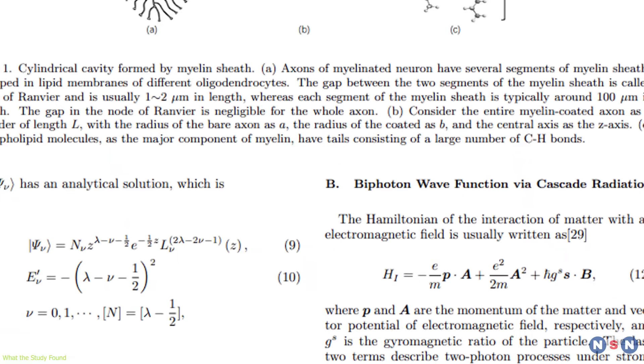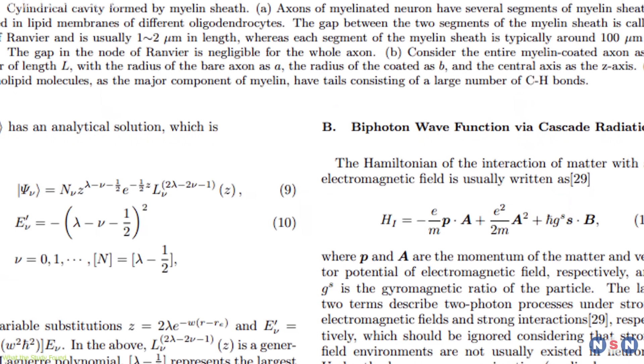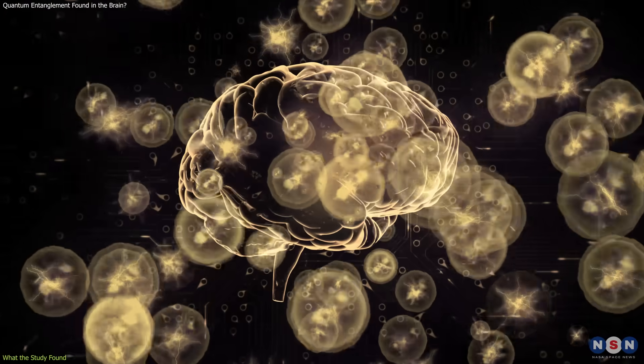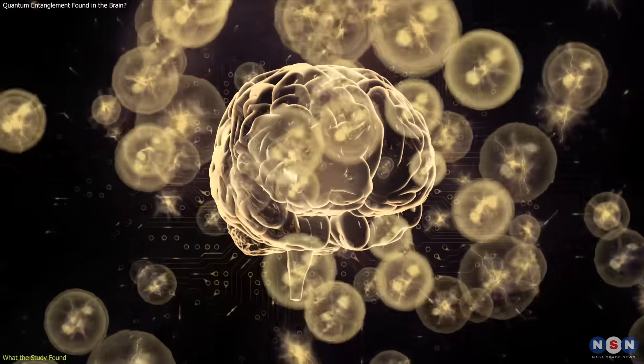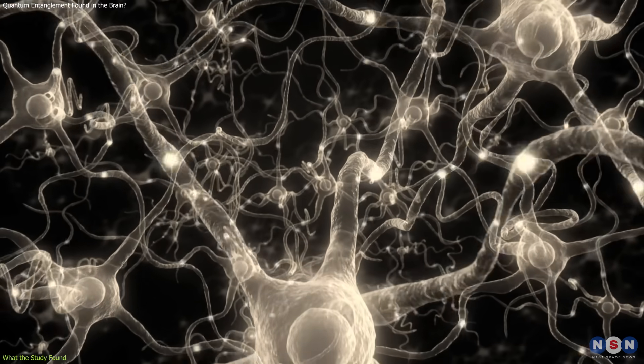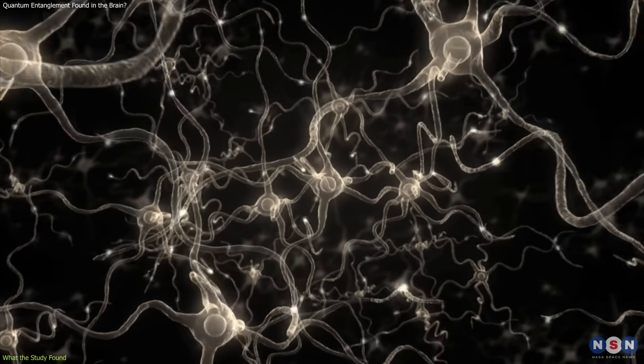The authors applied quantum electrodynamics equations to biological conditions and estimated that large numbers of biphotons could be emitted every second. Even if only a small portion is entangled, they could still influence signaling patterns across neural circuits.